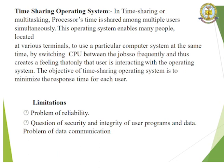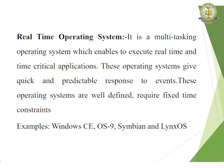In time-sharing operating systems, multitasking process time is shared among multiple users simultaneously. This OS enables many people located at various terminals to use a particular computer system at the same time. By switching the CPU between jobs so frequently, it creates the feeling that only one user is interacting with the OS. The objective is to minimize the response time for each user. Limitations include problems of reliability, security and integrity of user programs and data, and data communication issues.